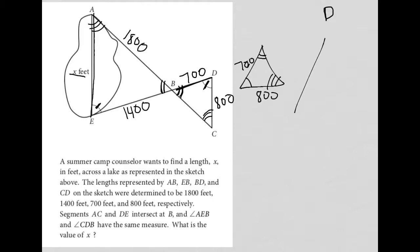And then if I redraw the larger triangle in the exact same orientation, so the double angle here, the single, the triple here, I know that between single and triple is what I'm looking for, so that's my X. And then between triple and double, that is 1,800 here, and between single and double, that is 1,400.